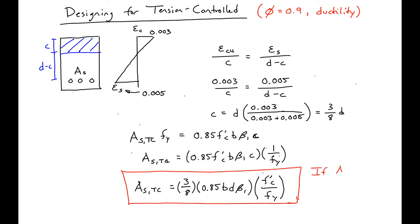If our AS is less than or equal to AS_tension-controlled, then our section will be tension controlled — tension controlled is okay. We always want to keep our area of steel less than or equal to our tension-controlled limit.